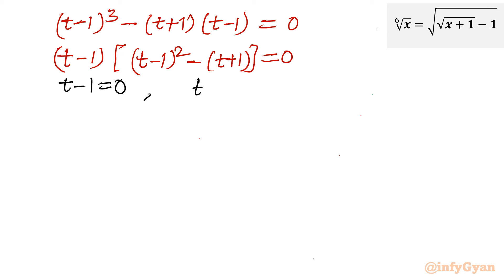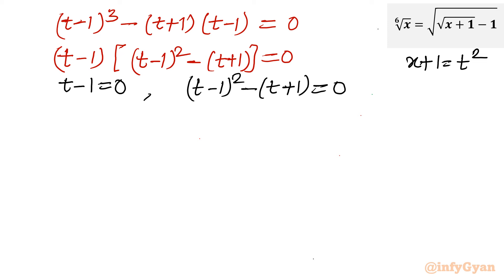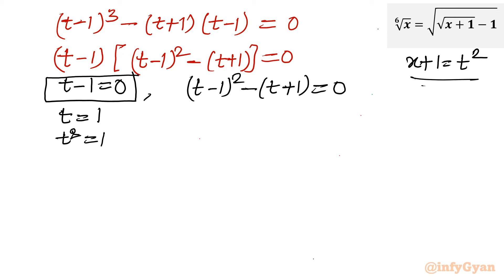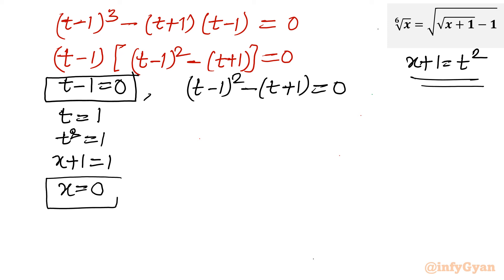From t minus 1 equals 0, we get t equals 1, so t squared equals 1. Since our substitution was x plus 1 equals t squared, we get x plus 1 equals 1, giving x equals 0. So the first solution of the radical equation is x equals 0.